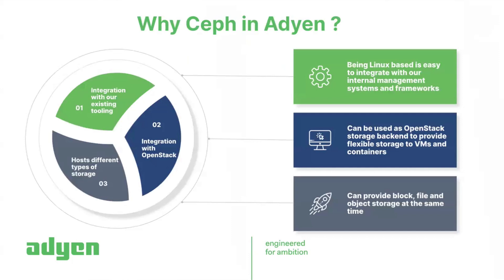Everybody here knows the advantages of Ceph — there are a lot compared to other solutions. But for us, these are the main ones for why we picked Ceph. First is the integration with our existing tooling. Here at Adyen, we manage all infrastructure as code. Everything — 99% or more — is managed through GitHub Operations and GitHub flows. Whatever system we choose has to be managed that way. No manually SSHing into servers and doing manual operations.